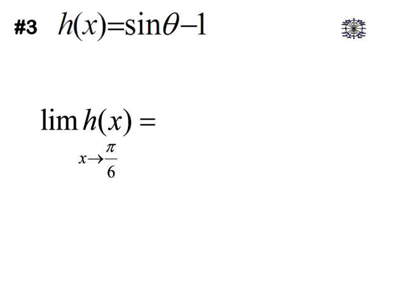Can we use substitution here? Well, as long as sine at pi over 6 exists, we should be fine. Remember, we're going to use our unit circle for this. And sine at pi over 6, we shall all know. So we're going to do h of pi over 6. Sine of pi over 6, which is 1 half, minus 1, which is negative 1 half. Yep. So substitution works for that one as well.